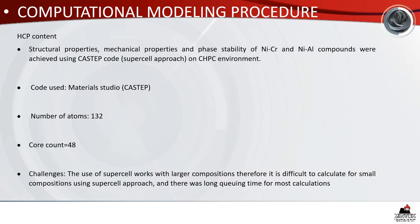The structural properties, mechanical properties, and phase stability of nickel-chrome and nickel-aluminium compounds were achieved using the CASTEP code supercell approach on an HPC environment. The code used was Material Studio, specifically CASTEP. The number of atoms was 132 and the core count was 48. A key challenge was that the supercell approach works with larger compositions, making it difficult to calculate small compositions. There was also a long queuing time for most calculations.